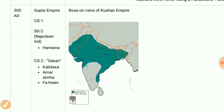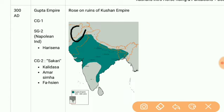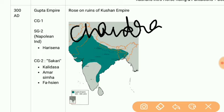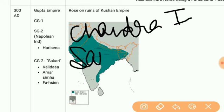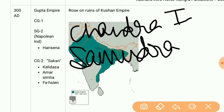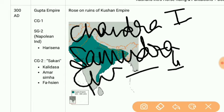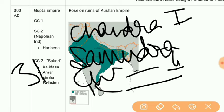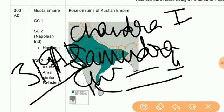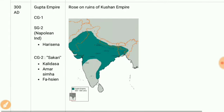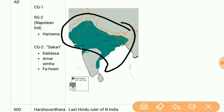Then we have the Gupta Empire. The rulers were Chandragupta I, then Samudragupta, then Chandragupta II, Kumaragupta, and Skandagupta. From 319 AD was known as the Gupta Age — the golden age of India — with the development of numerous arts and literature, and the Nagara style of temple building. The Gupta Empire covered almost all of India except the Deccan Plateau region.